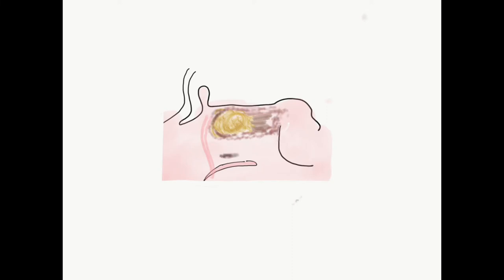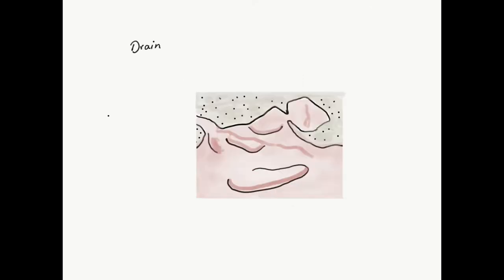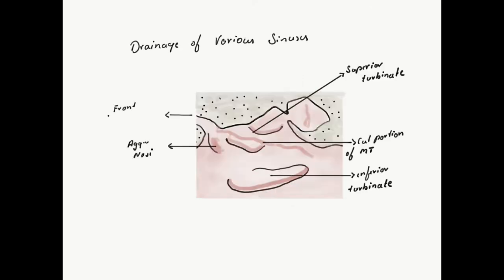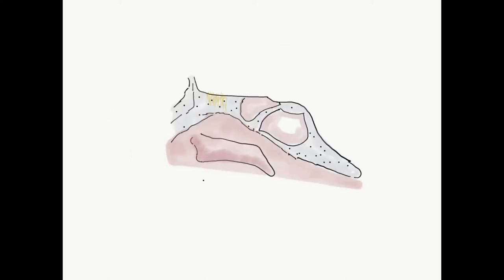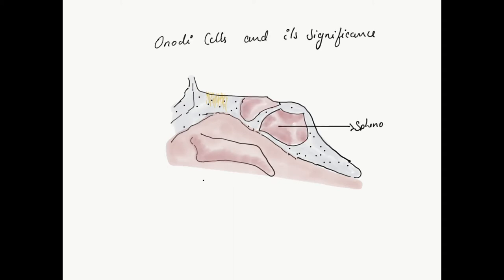If we remove the lamina papyracea laterally, one can enter into the orbit and appreciate the orbital fat and medial rectus within it. To summarize the drainage of various sinuses: the frontal sinus drains into the middle meatus, the sphenoid sinus drains into the sphenoethmoidal recess, the maxillary sinus ostium opens in the middle meatus, and the bulla ethmoidalis drains into the middle meatus. When there is pneumatization of posterior ethmoidal cells far more posteriorly, it forms Onodi cells, which are in close proximity with the sphenoid sinus and in close relation with vital structures like the optic nerve.